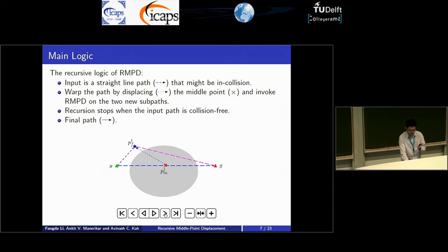Since we are using a recursive logic, we apply the same RMPD logic on these two new sub paths. From S to PF1, since it's already collision free, the recursion stops there. However, for the path from PF1 to Z, it is still in collision, therefore the recursion goes deeper. As you can see by the animation, it's the same middle point displacement logic. A final path is produced when there exists a collision free path from the start to the goal.